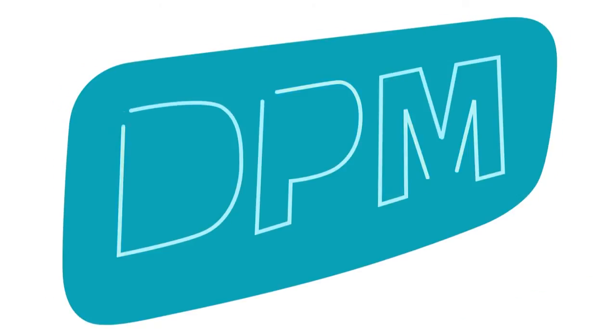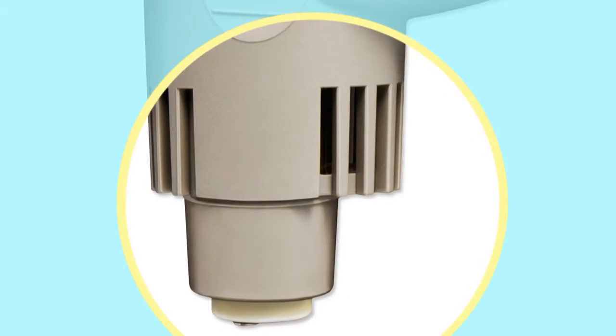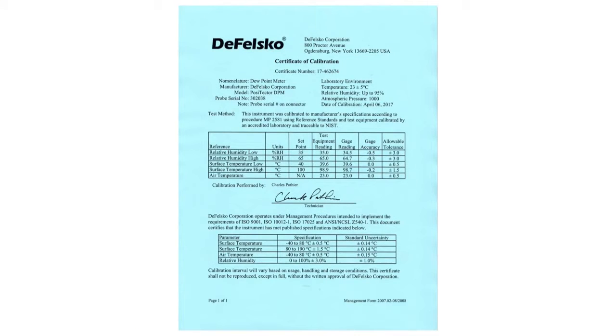The Positector DPM family of probes measures environmental parameters quickly and easily using high quality, precisely calibrated sensors. Each DPM probe includes a certificate of calibration traceable to NIST.